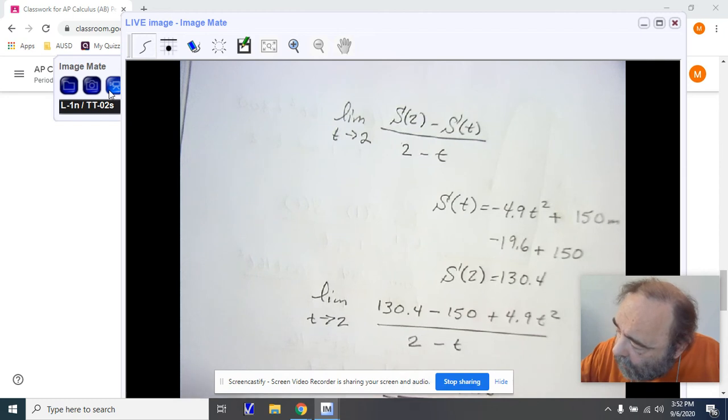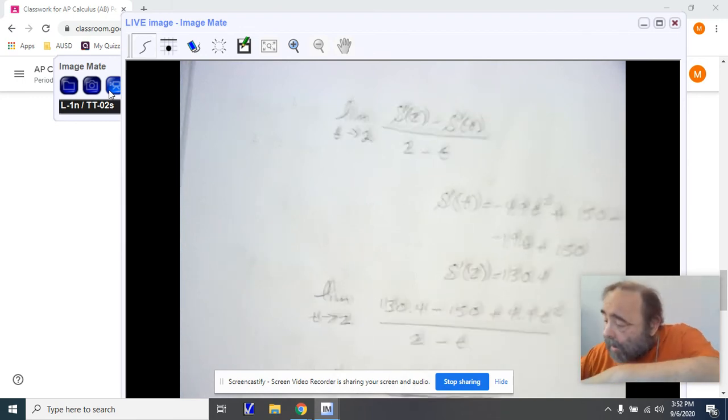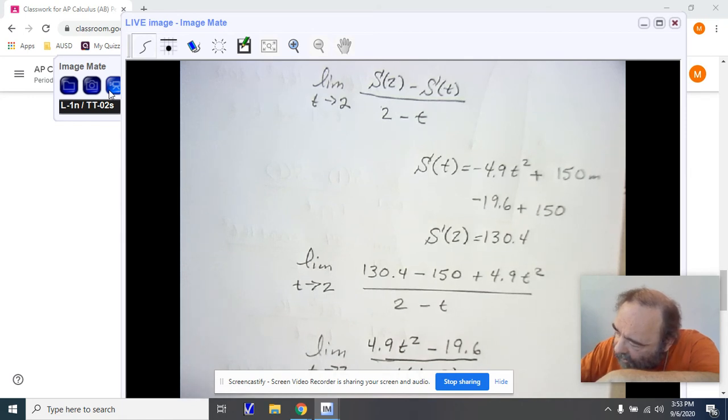Because I already know I'm going to have to, I'm factoring out the negative to have t minus 2. This is the limit as t approaches 2. I'm going to factor out the 4.9. I'm left with 4.9(t squared minus 4), divided by negative 1(t minus 2), for the limit.